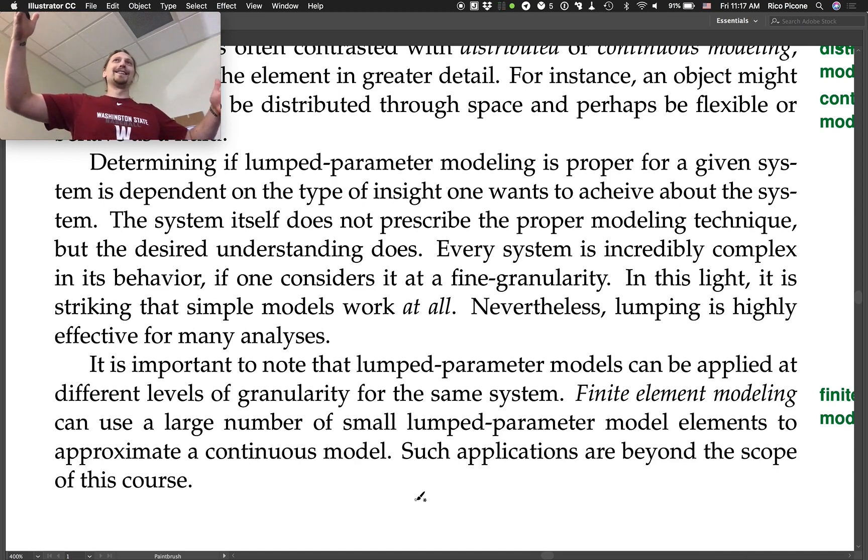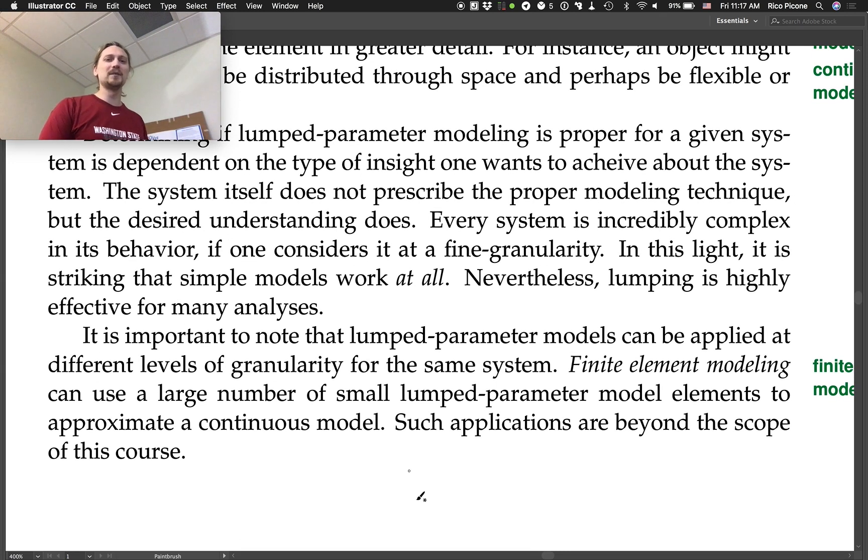In this light, it is striking that simple models work at all. We're using these really high level descriptions and they work really well to describe in bulk how things work. It's kind of surprising. It's not something that you would have necessarily expected when you understand the complexity of the world—the fact that anything is ordered at all is kind of amazing, and that we can use these simple equations to describe stuff. Nevertheless, lumping is highly effective for many analyses. It is important to note that lumped parameter models can be applied at different levels of granularity for the same system. Finite element modeling, or finite element analysis, sometimes called FEA, can use a large number of small lumped parameter model elements to approximate a continuous model.